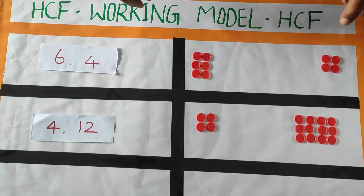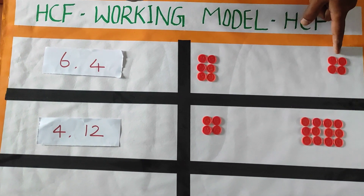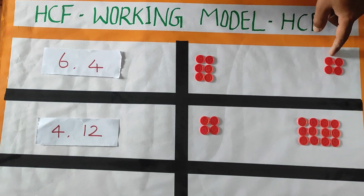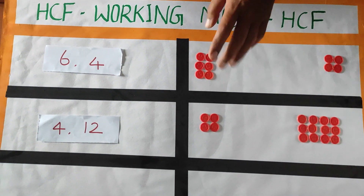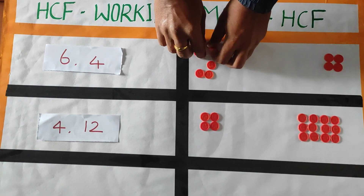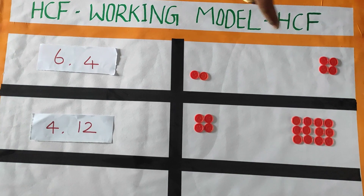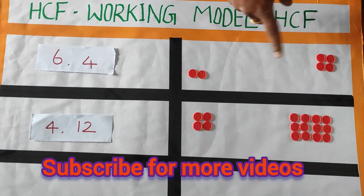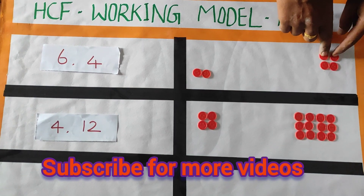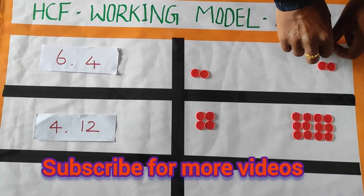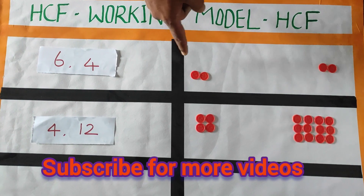In this, check which is the lowest number first. With 6 and 4, the lesser number is 4, so take 4 marbles from the highest number. After taking 4 marbles from 6, it becomes 2. Again check both numbers — which is greater and which is lesser. Here 2 is lesser, so take 2 marbles from the other group. Now both become equal, so the HCF of 6 and 4 is 2.